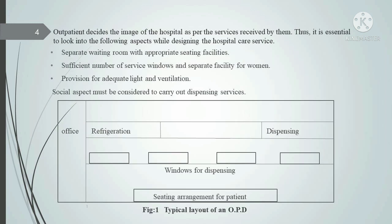Outpatient services decide the image of the hospital as per the services received by them. Thus, it is essential to look into the following aspects while designing the hospital care service: first, separate waiting room with appropriate sitting facility; second, sufficient number of service windows and separate facility for women; third, provision for adequate light and ventilation. Social aspects must be considered to carry out dispensing services. In this layout of an OPD, there is one office, one refrigeration unit, dispensing windows, and sitting arrangement for patients.